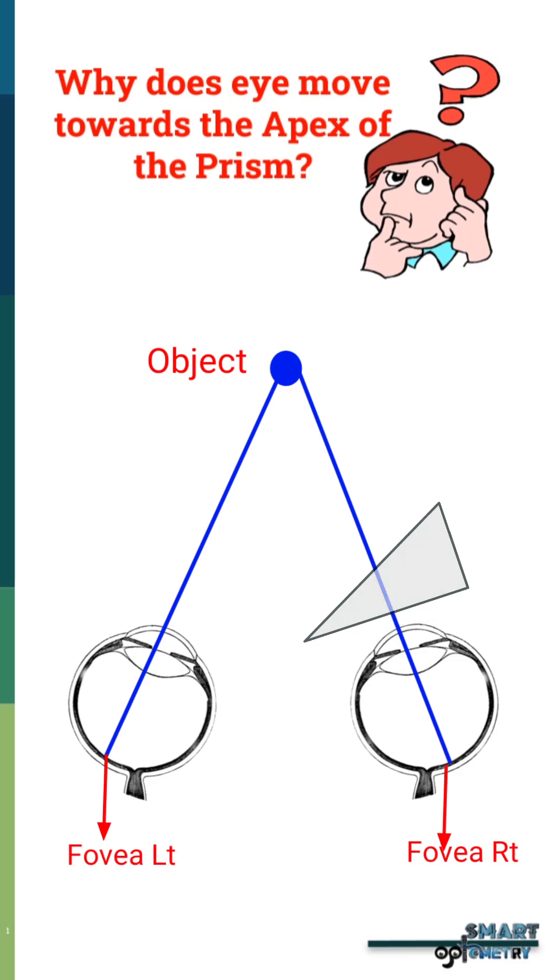Now when a prism is placed in front of the eye, it will bend the rays towards the base due to its optical properties.